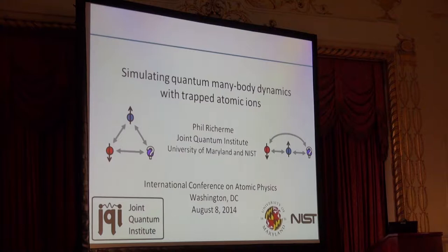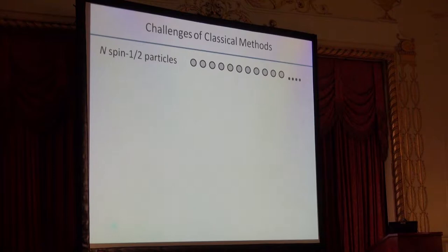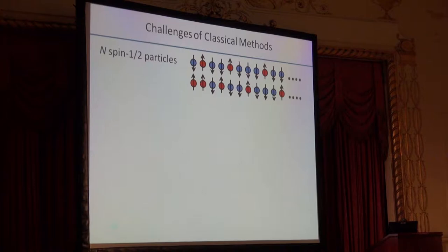To give you a flavor of why this is really kind of an interesting thing to do, consider a spin chain of n spin-half particles. Each of these spins can take on either an up or down spin configuration, and in general there are about 2^n different configurations that the spin chain can take on.